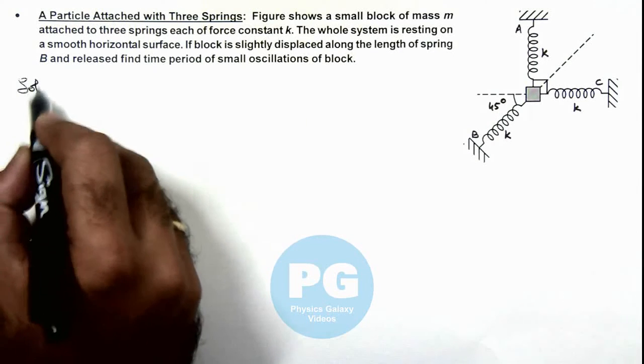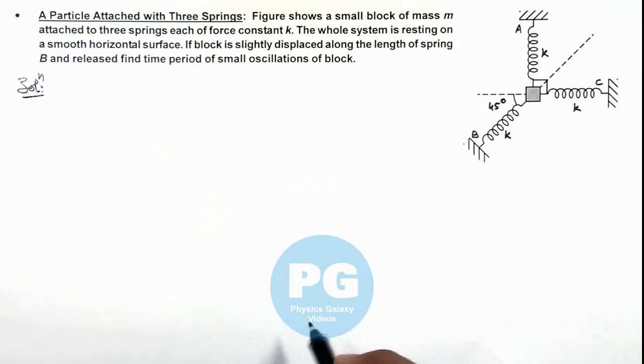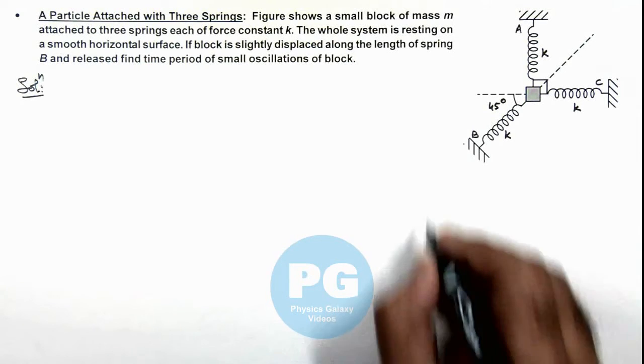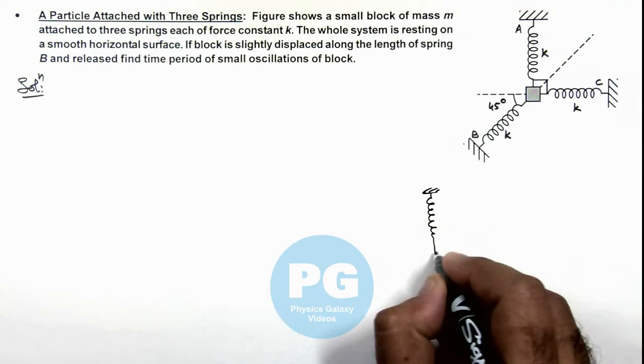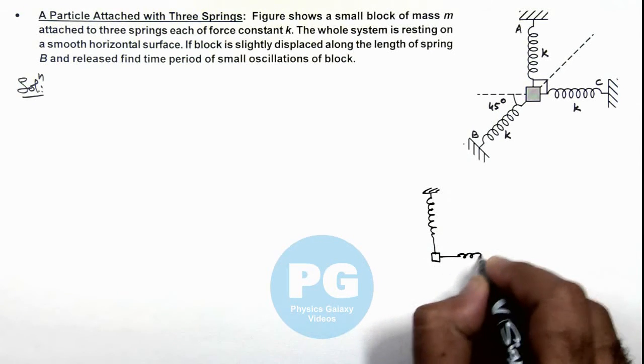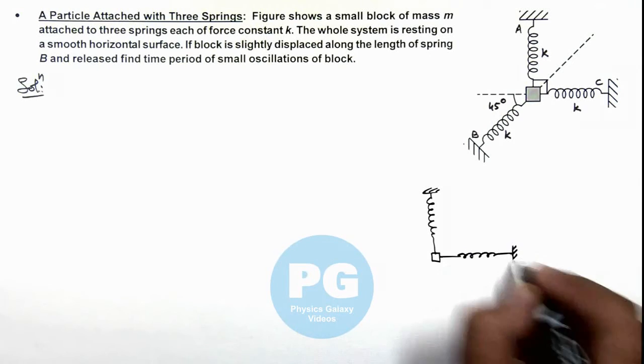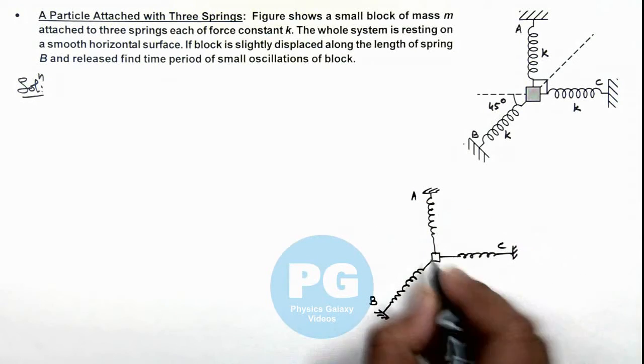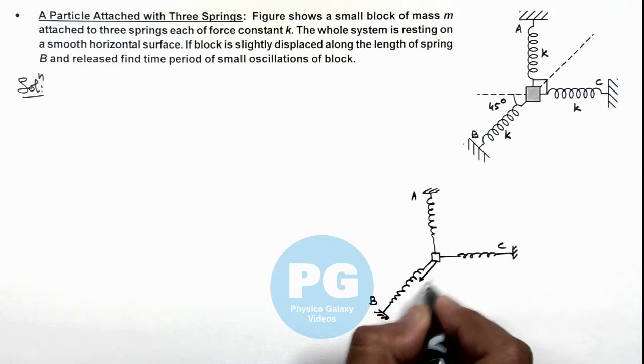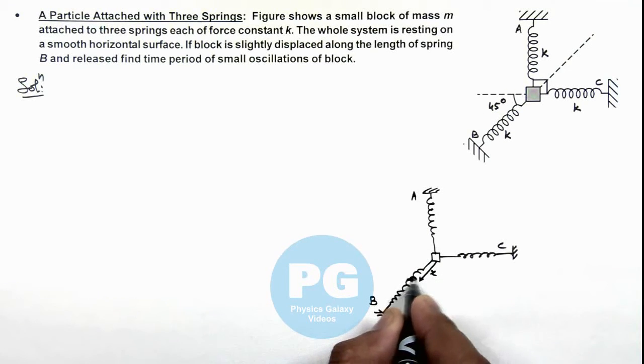To analyze the situation, it's better to first draw the position after displacement. Let me redraw the figure where this is the initial position of the block, and these are the springs shown in the figure. We are given that along the length of spring B, it is to be displaced in this direction by distance x. So this would be the position of the block, which I am drawing here.